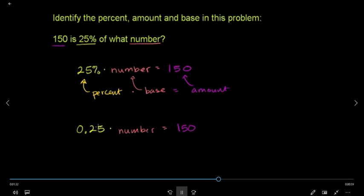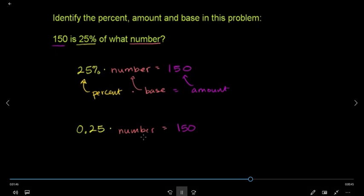If you have a number of points, you will have a number of points. So this is the point of point 25. This is the first one.